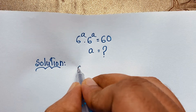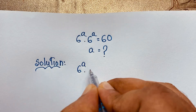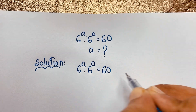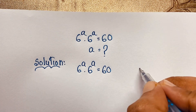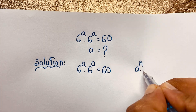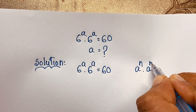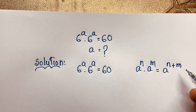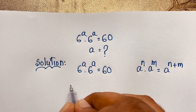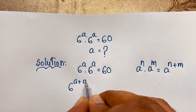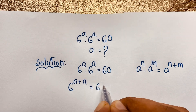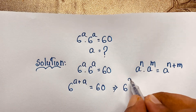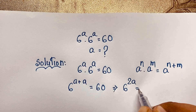Our question is 6 to the power a times 6 to the power a is equal to 60. Now according to the exponential formula, we know that a to the power n times a to the power m equals a to the power n plus m. If I apply this formula here, it will be 6 to the power a plus a, which is 6 to the power 2a, is equal to 60.